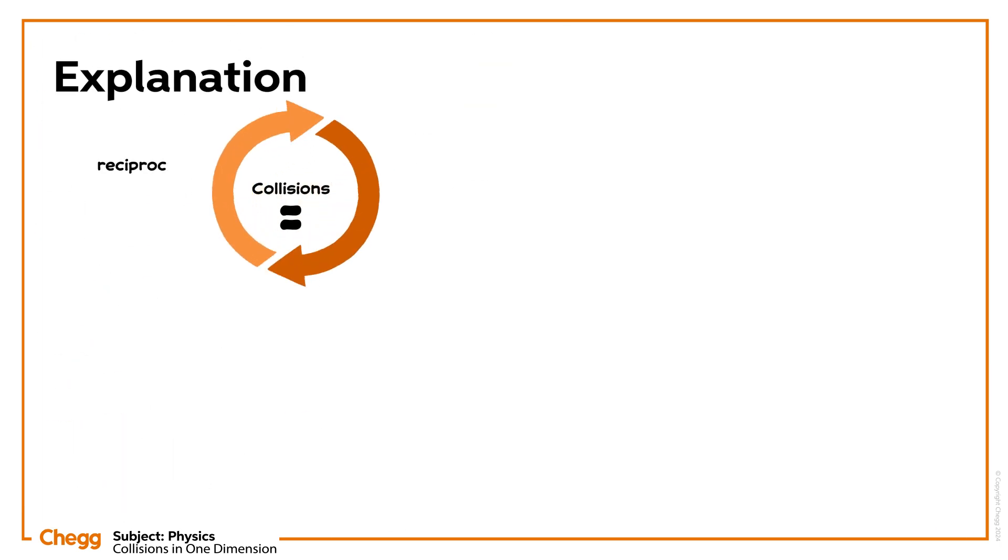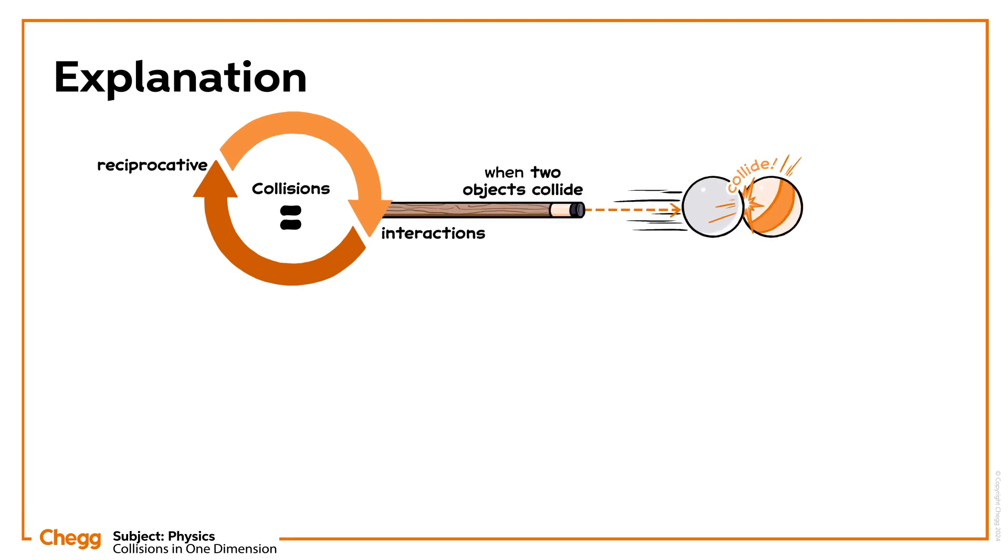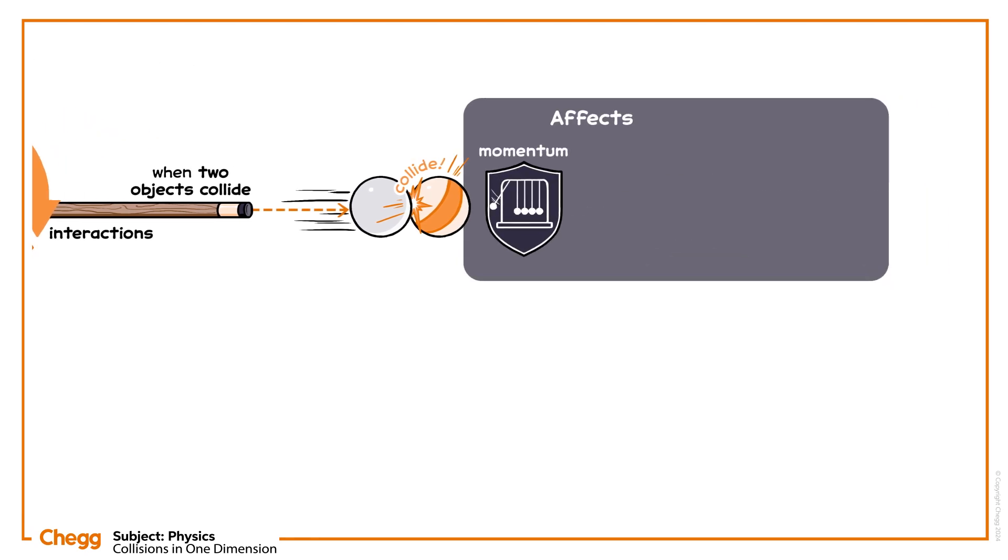Collisions are reciprocative interactions. When two objects collide, they affect each other's momentum and kinetic energy. The momentum of the system always remains conserved, but the kinetic energy may not, depending on the type of collision, depending on whether the collision is elastic or inelastic.